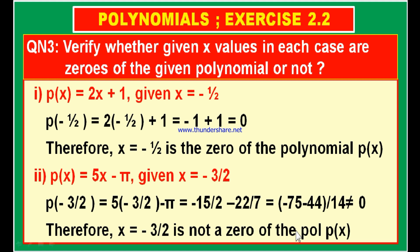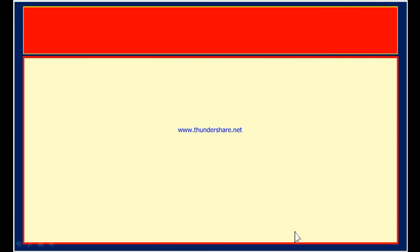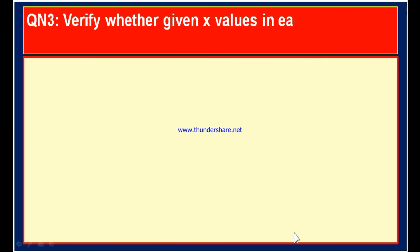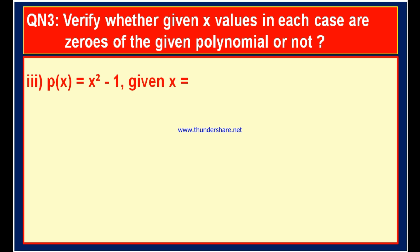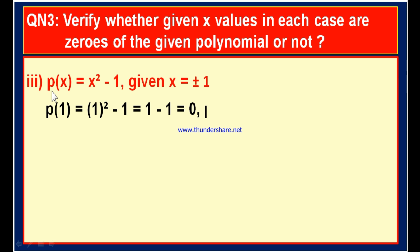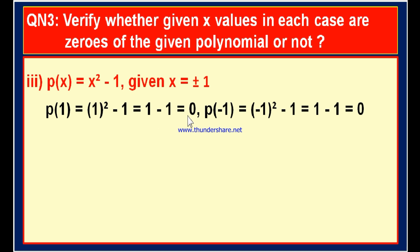Now let us solve some more bits from the same question number 3. Third bit: P of x is equal to x square minus 1 and given x is equal to plus or minus 1, meaning there are two values — x is equal to plus 1 and x is equal to minus 1. First of all, let us take x is equal to plus 1. Then, P of 1 is equal to 1 square minus 1. 1 square is 1; 1 minus 1 is 0. Therefore, P of 1 is equal to 0, so it is the zero of the polynomial.